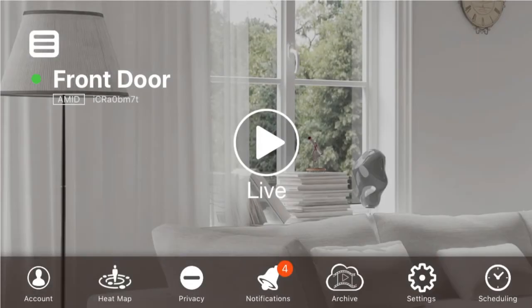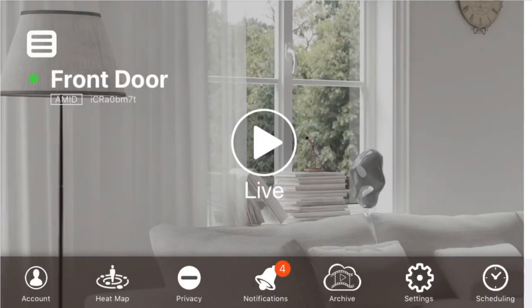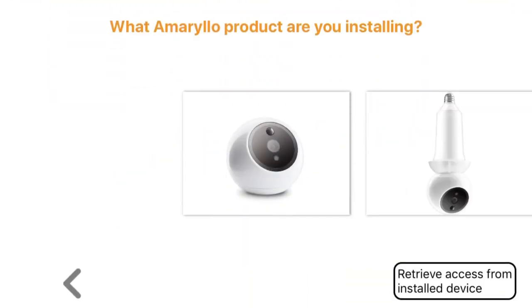If the recipient's device has installed another camera, tap on the hamburger icon on the top left corner, select Add Another Camera, and this will bring you to the installation page. Just follow the previous steps to complete sharing access.